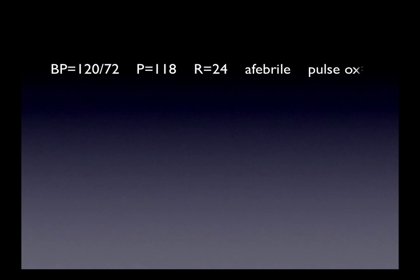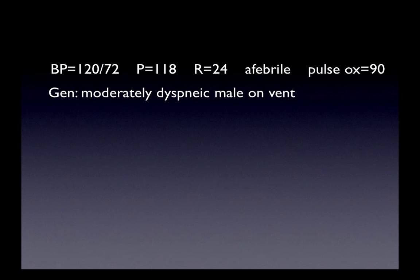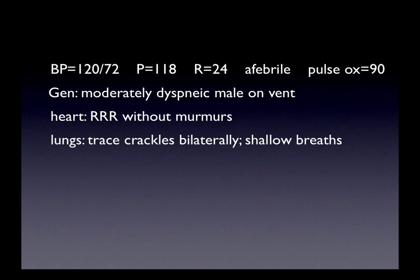Let's take a look at his physical exam. Ultrasonography should never replace the physical exam — it should enhance it. Blood pressure is 120 over 72. He's tachycardic at 118 and tachypneic with a respiratory rate of 24. He's afebrile and his pulse oximeter is at 90%. His general appearance is that of a moderately dyspneic patient. His heart reveals a regular rate and rhythm without murmurs. His lung shows trace crackles bilaterally with shallow breaths.